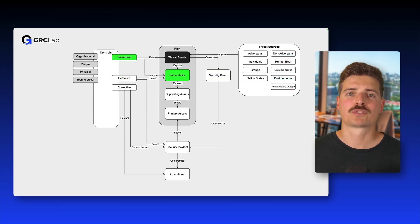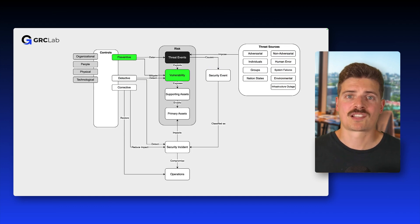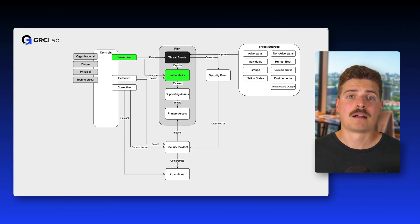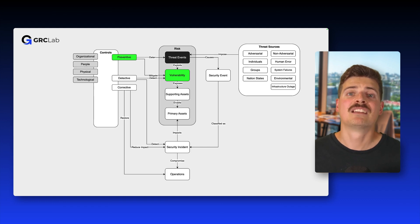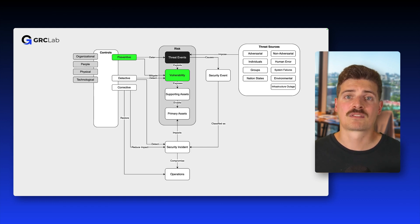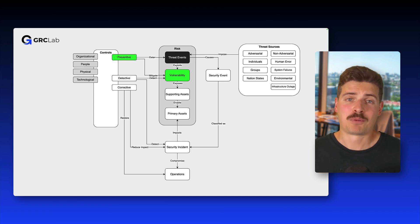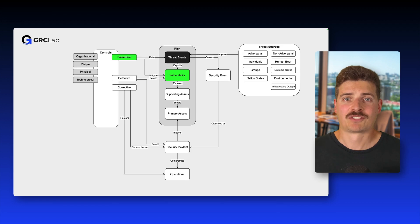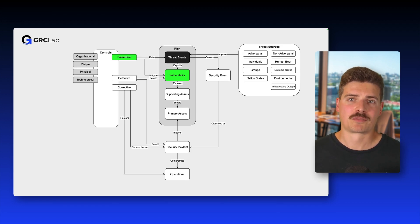Preventive controls aim to reduce risk by stopping threats before they can cause harm. For example, CCTV cameras might discourage intruders just by being visible. Security baselines for IT systems hopefully ensure proper configuration, and policies and procedures define expected behavior and reduce the chance of human error. All of these are designed to reduce vulnerabilities and deter attacks.